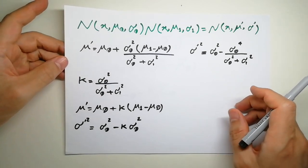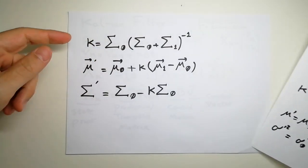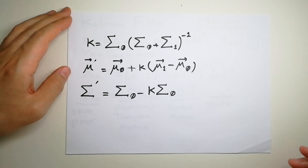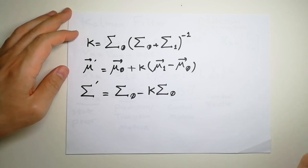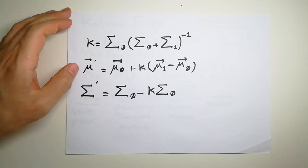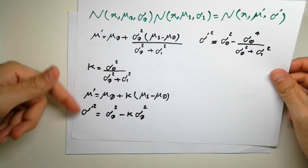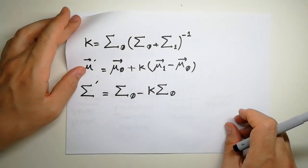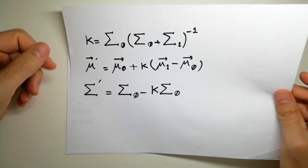That was the essence of the Kalman filter. Before looking at the equations, if you have n-dimensional data, instead of a number for the mean you have a covariance matrix and a vector — it's exactly the same concept but for n-dimensional data. Let's have a look at how we implement this.